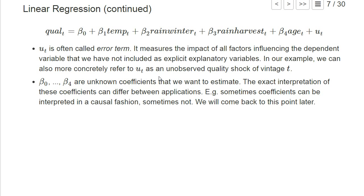The exact interpretation of these coefficients can differ between applications. Sometimes we can interpret them in a causal fashion—beta one measures by how much one degree higher temperature influences or causally affects the quality of the wine. Sometimes we only say these are coefficients that tell us how these two variables are correlated, or by how much one degree higher temperature affects our prediction of quality, even though it does not necessarily have a causal interpretation.